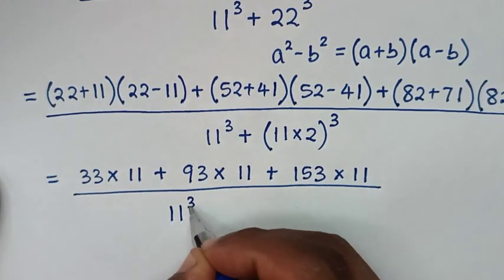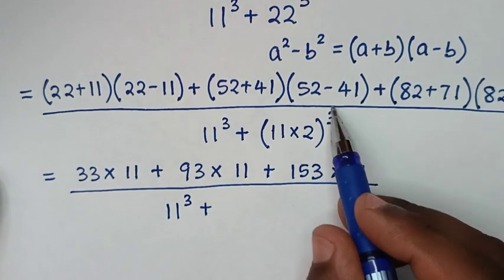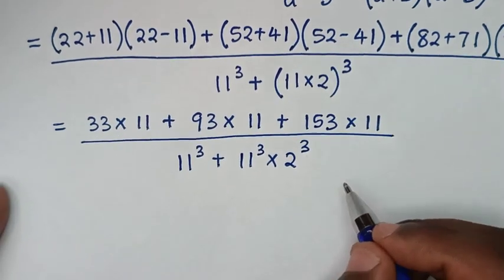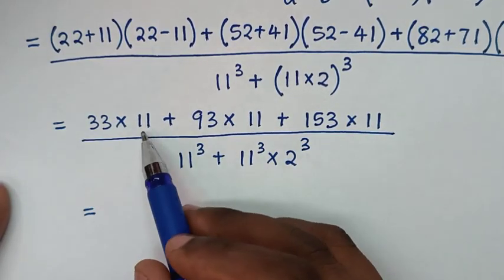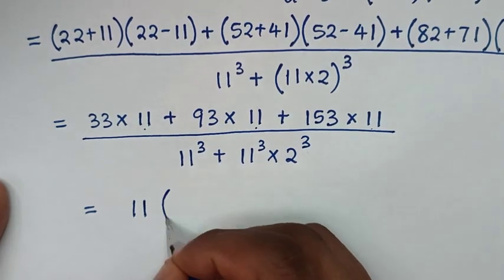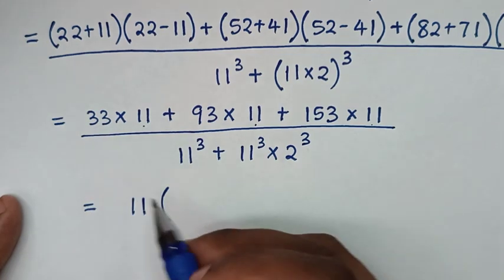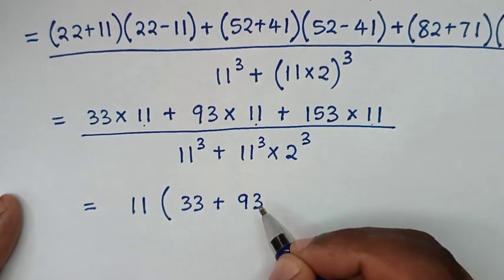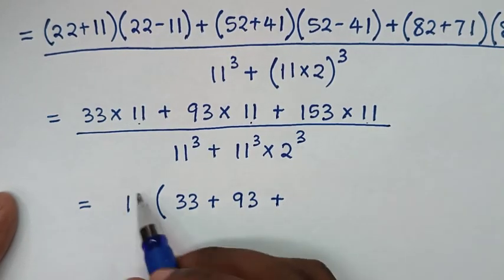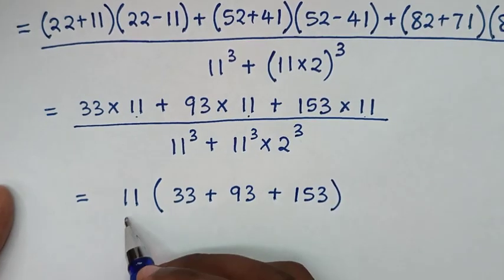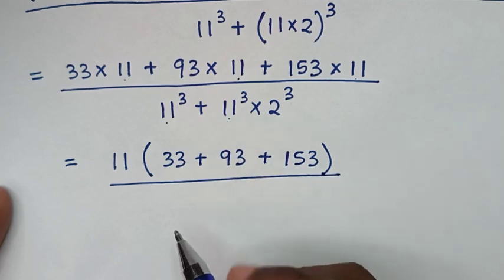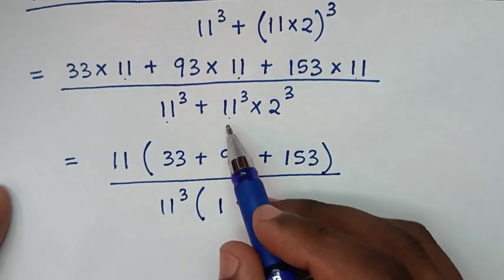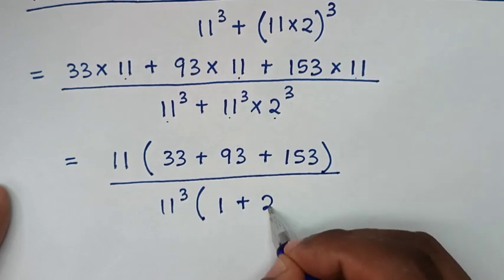In the denominator, 11 power 3 is common, so we take 11 power 3 out of the bracket. We take the power 3 inside the bracket, so it becomes 11 power 3 times 2 power 3. So the denominator is 11 power 3 times the bracket 1 plus 2 power 3. In the numerator, 11 is common, so we take 11 out of the bracket: 33 times 11 divided by 11 is 33, plus 93 times 11 divided by 11 is 93, plus 153 times 11 divided by 11 is 153.